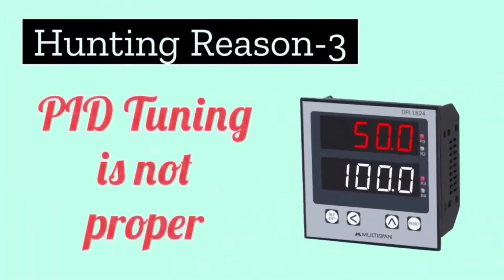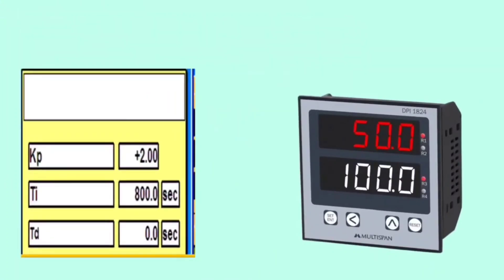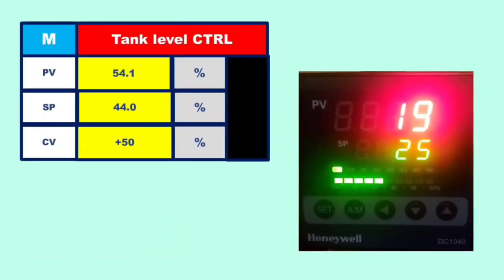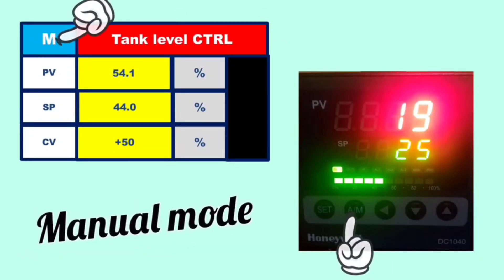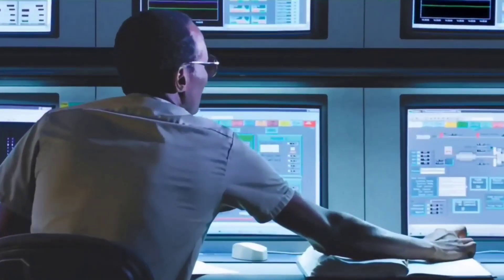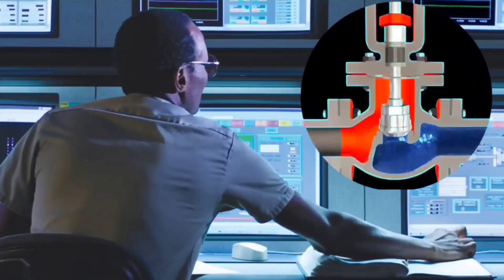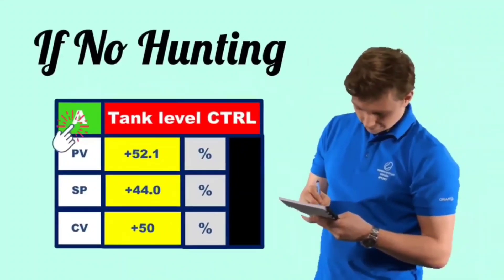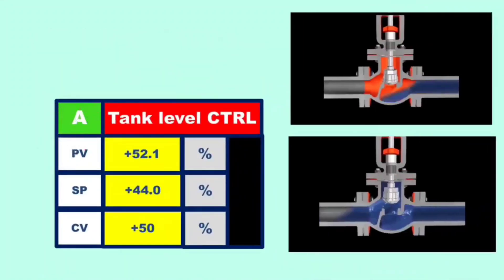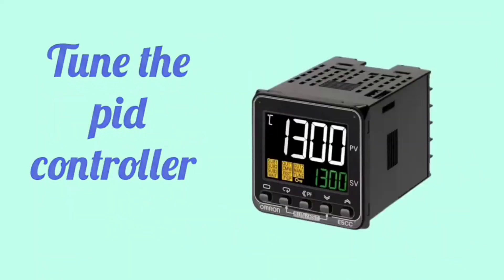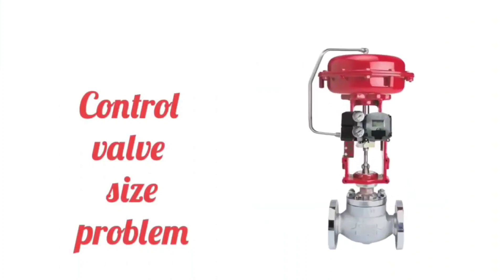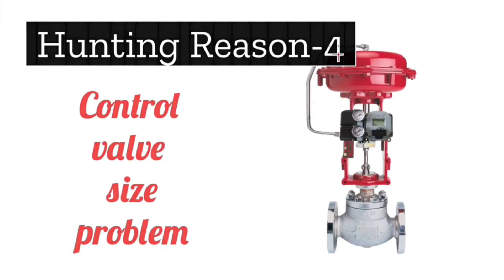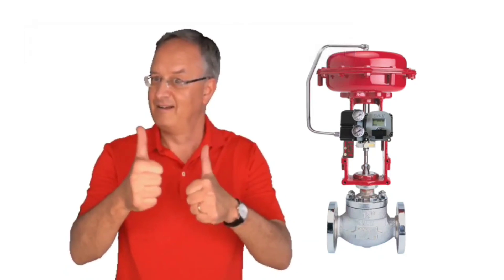The third reason for hunting may be that PID tuning is not proper. The problem of hunting can also arise due to improper tuning of the PID controller. To check this, operate your PID controller in manual mode and operate the control valve at different outputs. If there is no hunting in manual mode, then operate the control valve in auto mode — if hunting appears in auto mode, tune the PID controller. Also, if the control valve being used is not of the proper size, hunting problems can occur.